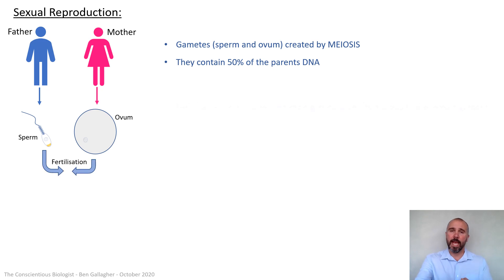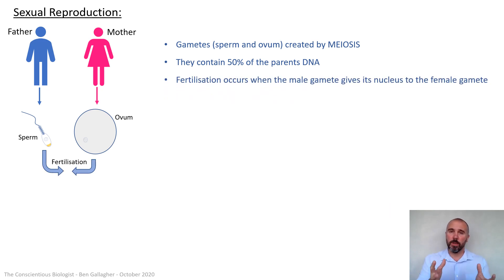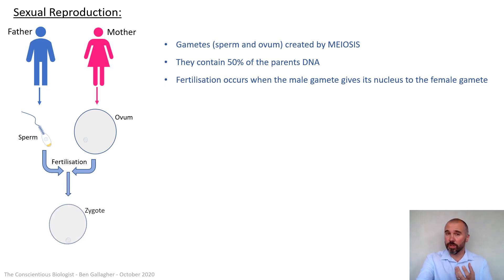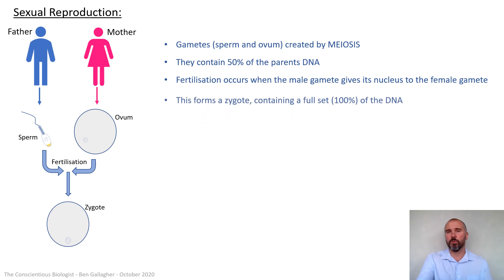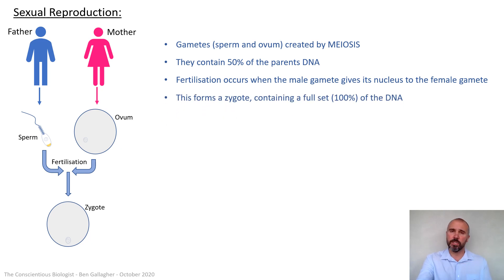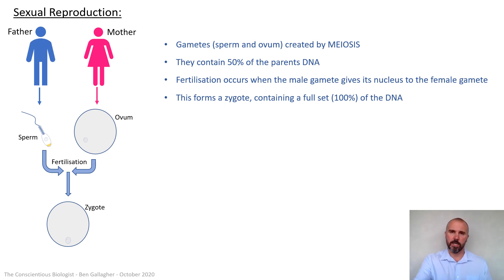The sperm and the egg have to join together — that's fertilization, normally by intercourse. At fertilization the sperm and egg cells will fuse together, or the nuclei will fuse together, and that will make your first diploid cell which is a zygote. It's the zygote cell that will then multiply and become all the other cells.